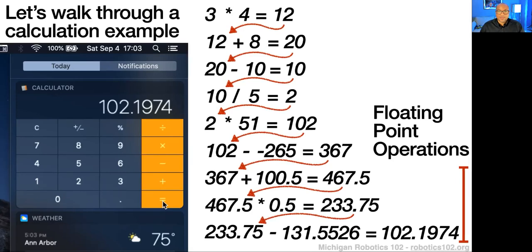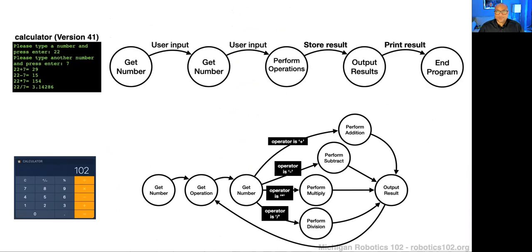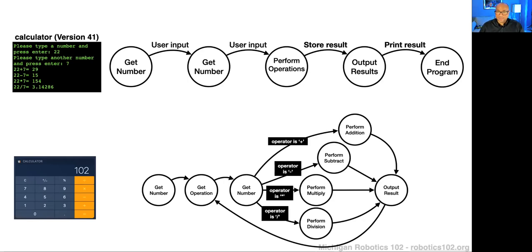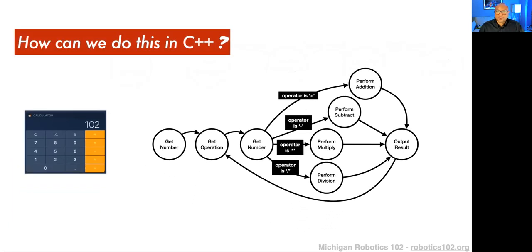For comparing these two: what our calculator looks like — the finite state machine at the top — versus what a real pocket calculator is going to do — the finite state machine on the bottom — we note there are some important things that are very different. There are important concepts we need to understand in order to get from our current calculator to a real pocket calculator. The question is: how do we code up this finite state machine in C++?